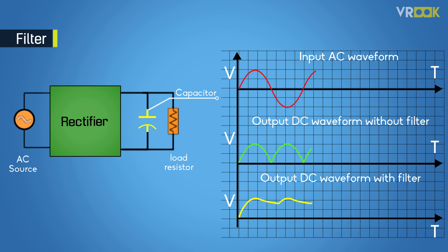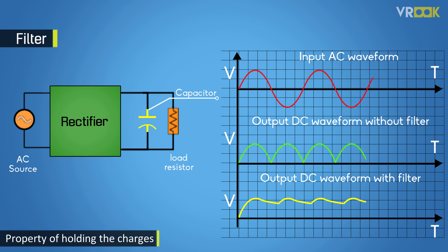This increase and decrease of voltage across the capacitor occurs slowly because of its property of holding charges — it gets charged slowly and discharges even more slowly, thus giving us an almost pure DC signal. However, as mentioned earlier, there is a limit on the cost and size of the capacitor, so we cannot use it alone to get a pure DC signal.